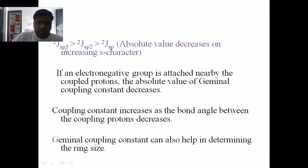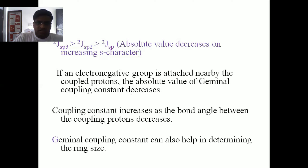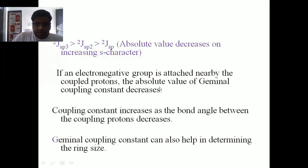Going from sp³ to sp hybridization, the value of the sp³ coupling constant will be greater in comparison to sp² and sp. If an electron-additive group is attached nearby the coupling protons, the absolute value of the geminal coupling constant decreases. The value of the geminal coupling constant is either negative or near to zero, so absolute value means we consider the numerical value irrespective of the sign.